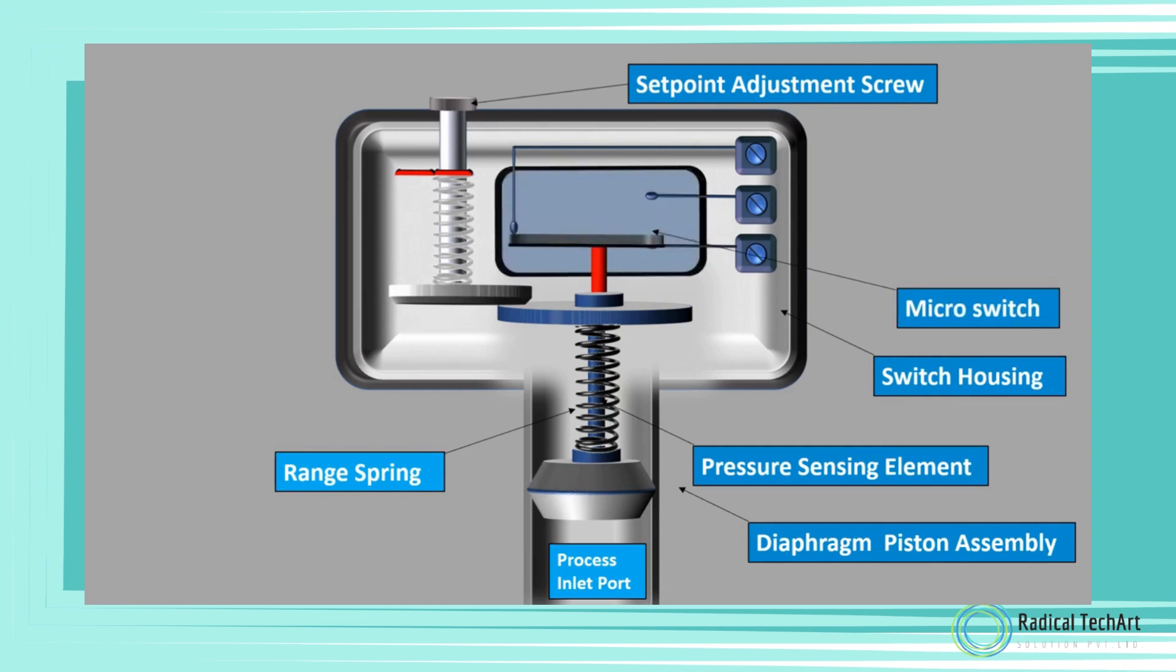Micro switch is used to make or break an electrical circuit when the pressure switch operates. We have already discussed about it in our previous video. Link of that video is there in the description. Terminals - this is where the circuit controlled by the pressure switch is connected.